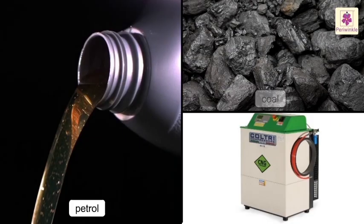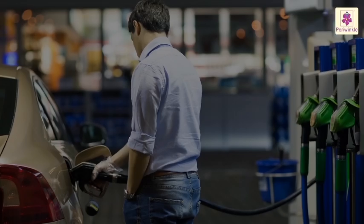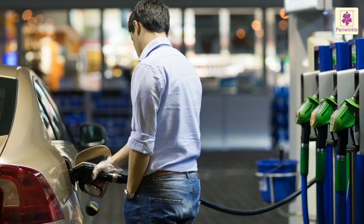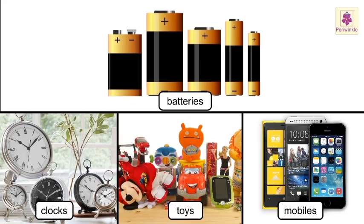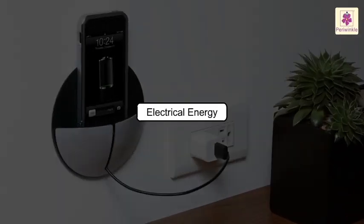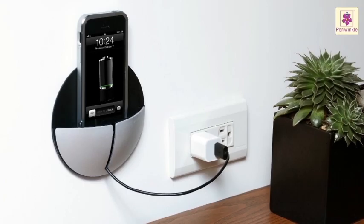Fuels like petrol, coal and natural gas have energy which is released on burning. Vehicle engines use this to produce motion. Batteries have energy which make clocks, some toys and mobiles work. Electrical energy: when we plug in a battery, the electrical energy moves through the wire and charges the stored chemical energy in the battery. The same thing happens when we switch on any electric appliance.